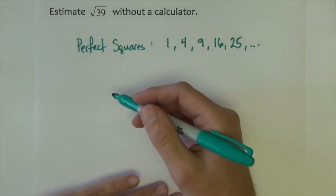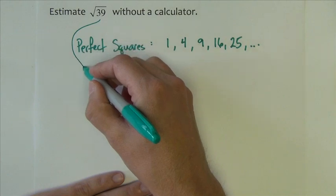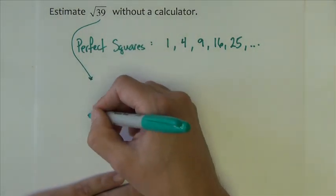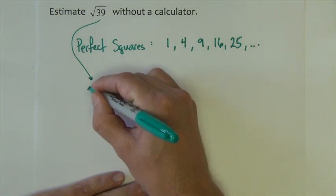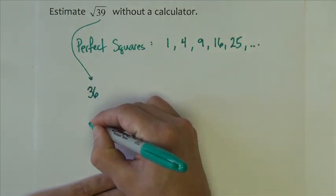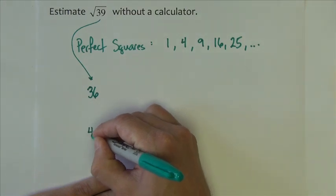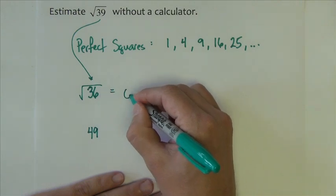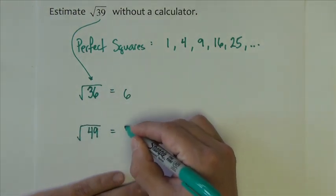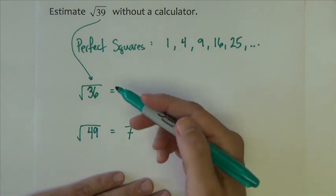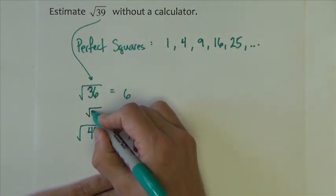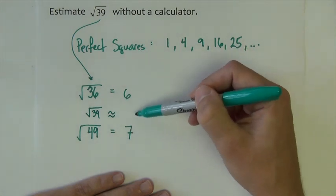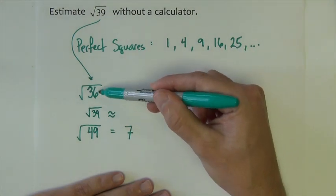When estimating this square root, the best way to do it is to figure out what two perfect squares does 39 fall between. And 39 would fall between 36 and 49. The square root of 36 we know to be 6, the square root of 49 we know to be 7. We want 39, so we could estimate it as some number between 6 and 7, as 39 is between 36 and 49.